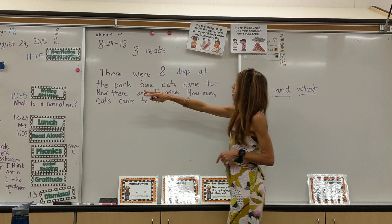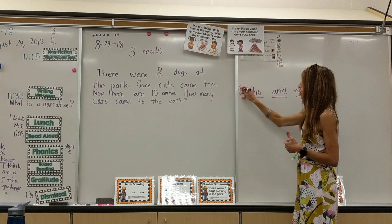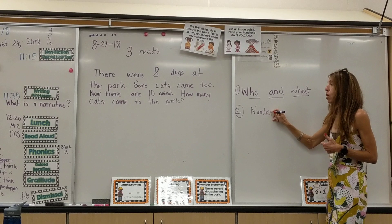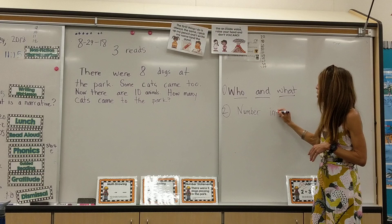Then we read it a second time: 'There were eight dogs at the park. Some cats came too. Now there are ten animals. How many cats came to the park?' The second read we call number information, and we ask the kids what number information do they know from the story — not what they need to know, but what number information were they given.